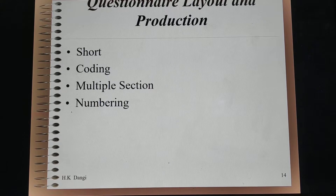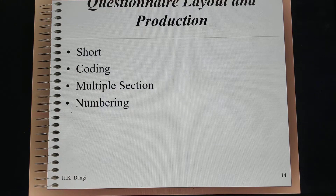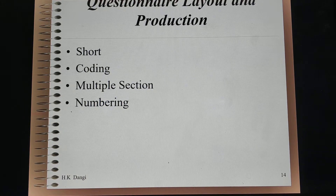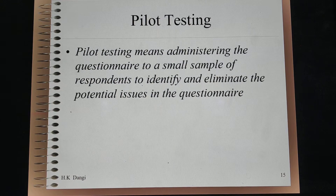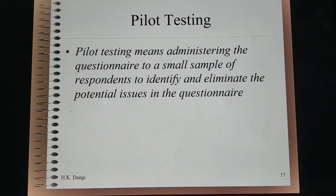Regarding question layout and production — the questionnaire should be short, and a typical survey should last no more than 10 minutes. Each question should be coded and numbered properly, and you should have multiple sections. For example, if the first section covers demographics, label it as demographic questions; if the second covers customer satisfaction, label it accordingly. Whatever questionnaire you design, you should always conduct a pilot study — administering the questionnaire on a small sample to identify and eliminate potential issues.